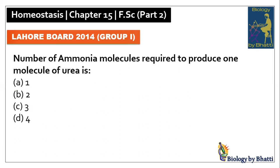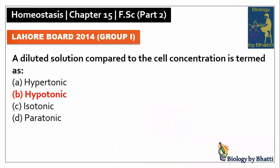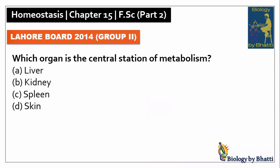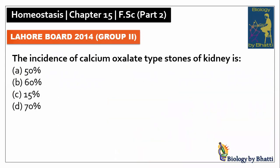Lahore Board 2014 Group 1: the number of ammonia molecules required to produce one molecule of urea is 2, so the answer was D option. In this paper, which organ is the central station of metabolism — that is the liver, so the answer was A option. In this paper, the incidence of calcium oxalate type stones of the kidney is 70%, so the answer was D option.